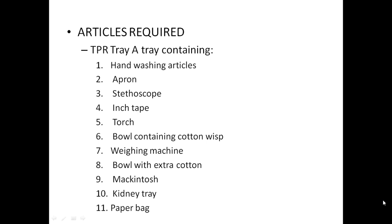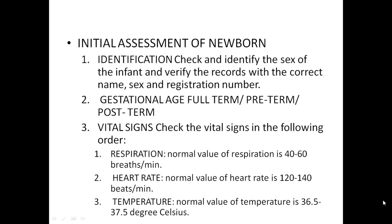Articles required for a newborn assessment include a TPR tray containing hand-washing articles, hair prints, stethoscope, inch tape, torch, bowl containing cotton swabs, weighing machine, board with extra cotton, mackintosh, kidney tray, and paper bag.